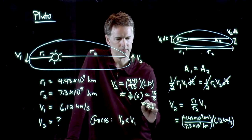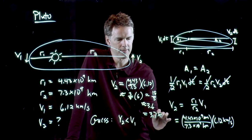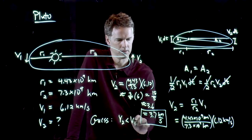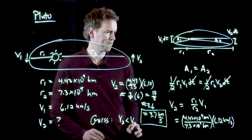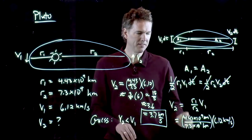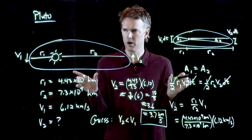3.7. All right. So our approximation was pretty good. We get 3.7 kilometers per second. All right. Certainly less than V1, and it scales just like the radii, R1 to R2.